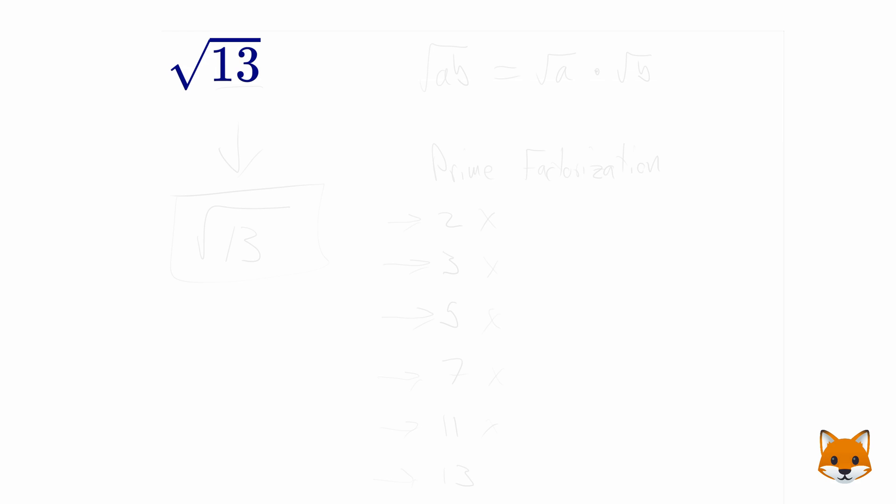All right, here we're being asked to simplify the square root of 13. There's one important rule to know in this type of problem: if you have the square root of a times b, that can be rewritten as the square root of a times the square root of b. The reason this is helpful...